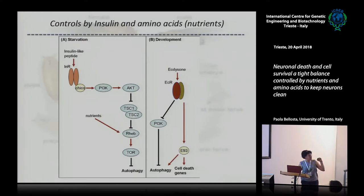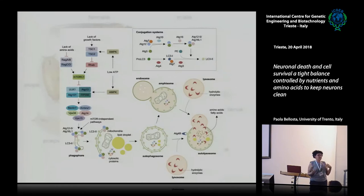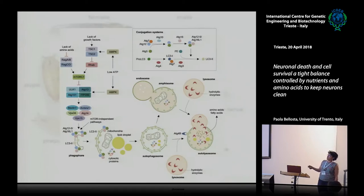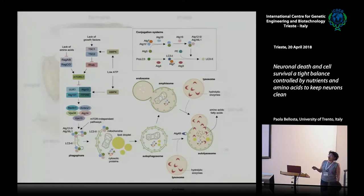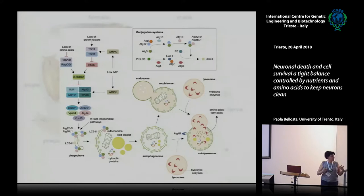I say this because later it's important to distinguish autophagy happening in the fat body from that in other parts of the animal. Regarding autophagy generally — I think we've seen this before — what I want you to remember is that autophagy is always active when nutrients are low, because TOR signaling can inhibit autophagy by phosphorylation and other means.